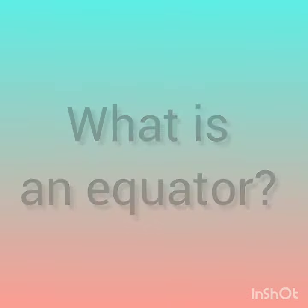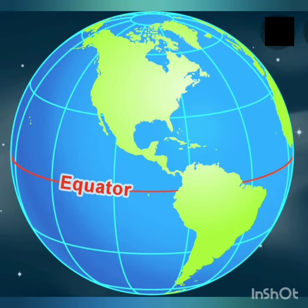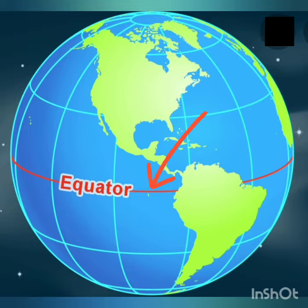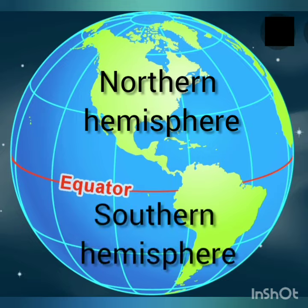Now, what is an equator? Children, it is an imaginary line that runs around the Earth and divides it into two equal halves, that is, the Northern Hemisphere and the Southern Hemisphere.